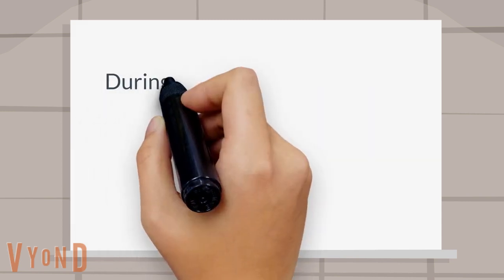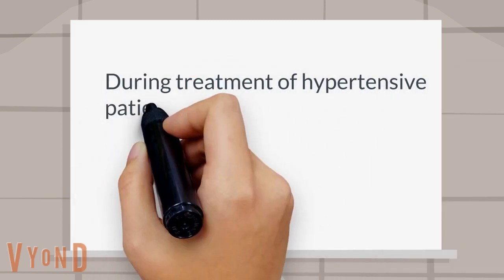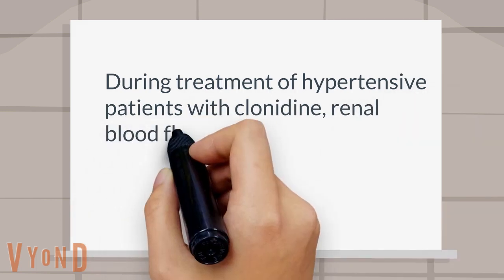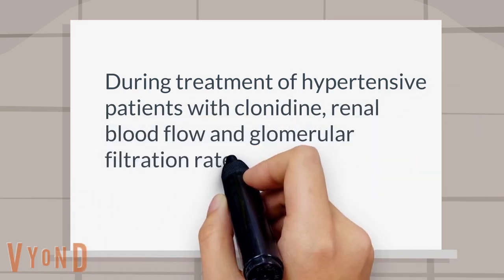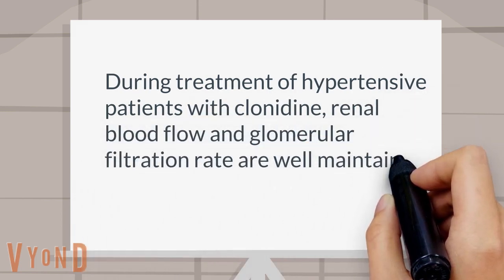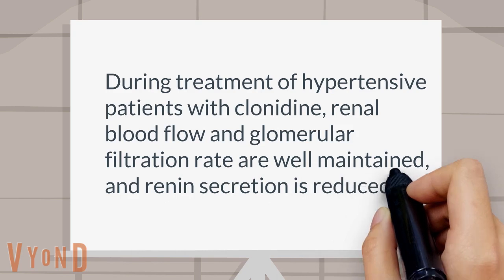During treatment of hypertensive patients with clonidine, renal blood flow and glomerular filtration rate are well maintained and renin secretion is reduced.